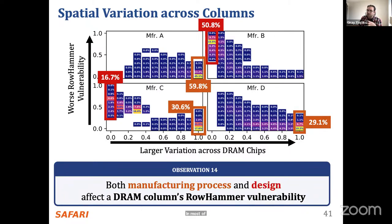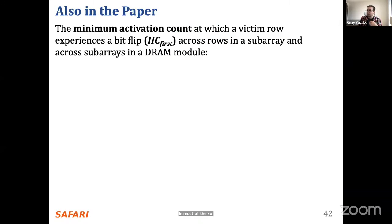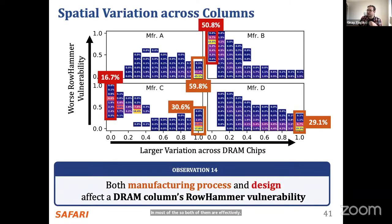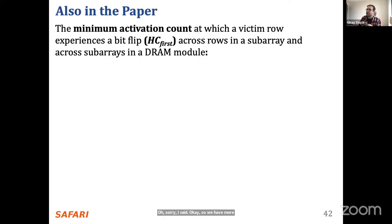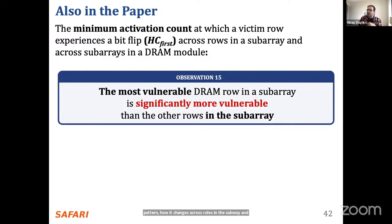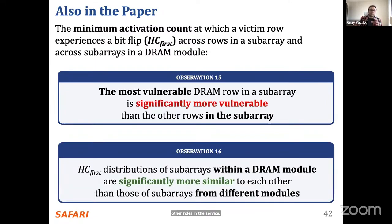When we look at this variation across different manufacturers, we see different accumulations of DRAM rows in different regions, but we see both design-induced and manufacturing-process-induced variation in most DRAM chips. We also look at minimum activation counts across rows in a subarray and across subarrays in a DRAM module. The most vulnerable DRAM row in a subarray is significantly more vulnerable than other rows in that subarray. Distributions are more similar across different subarrays within the same chip than across subarrays from different chips or modules.